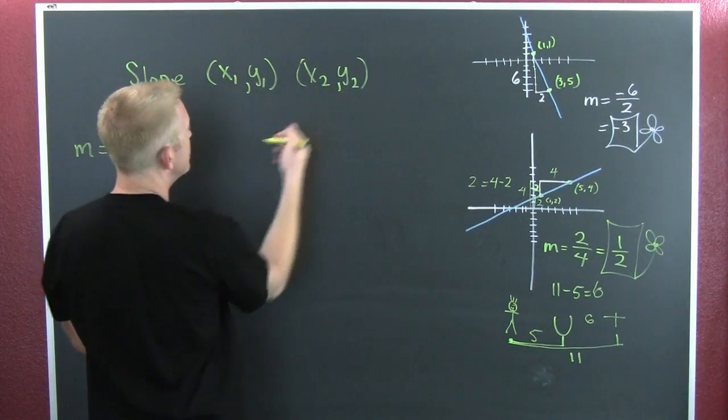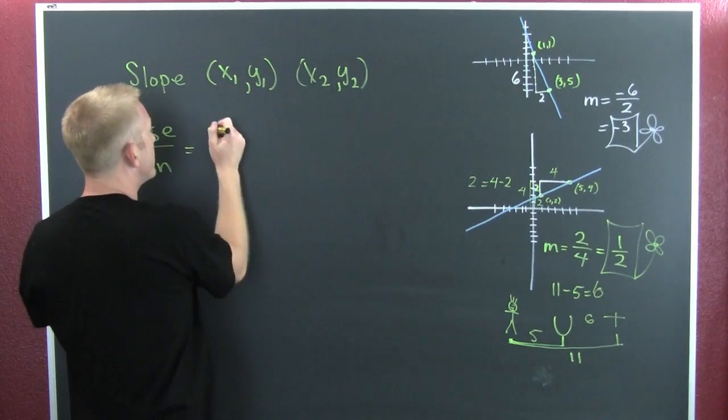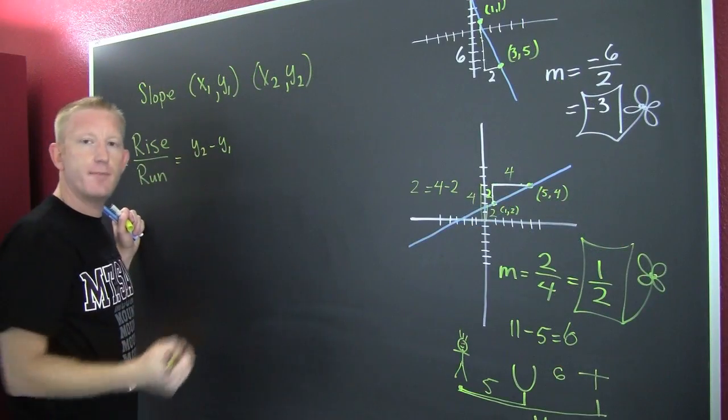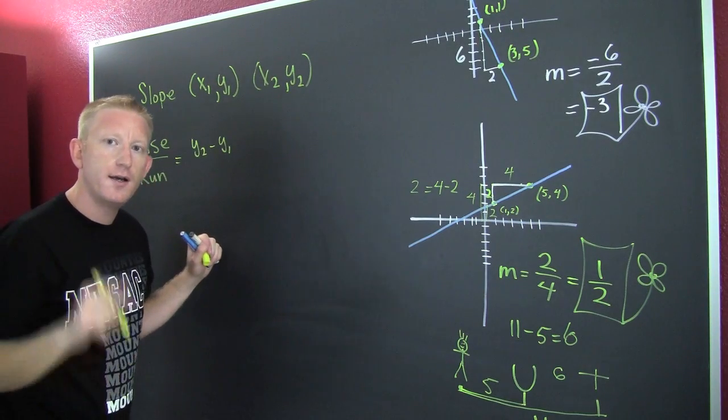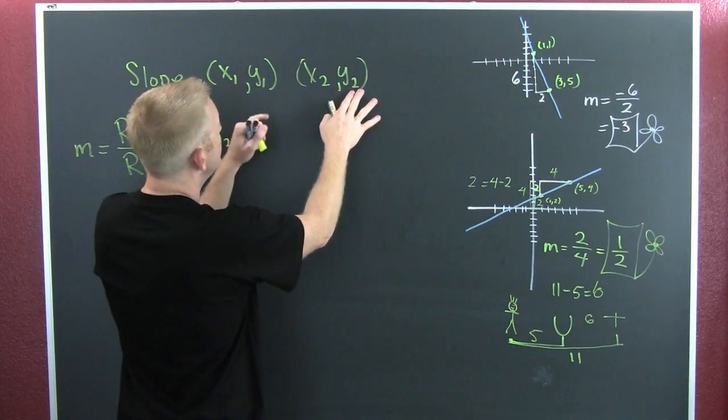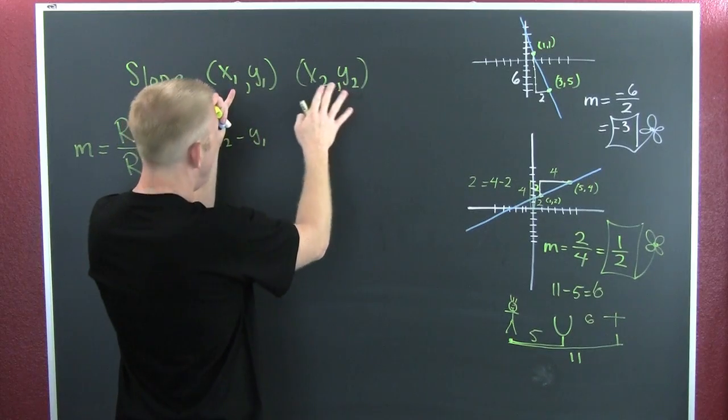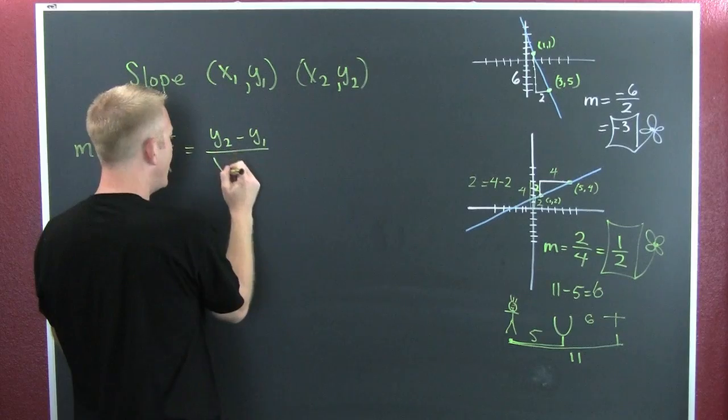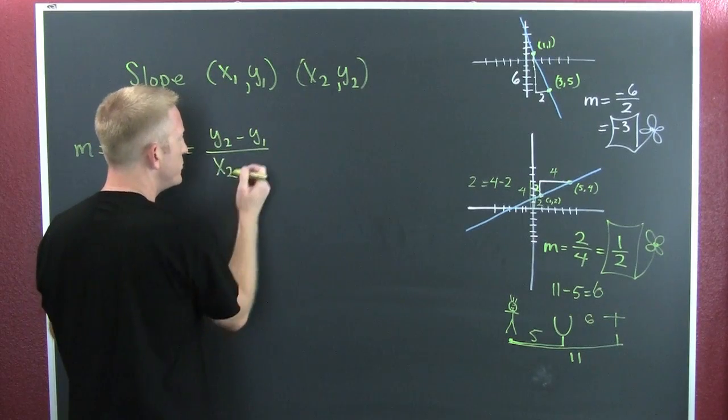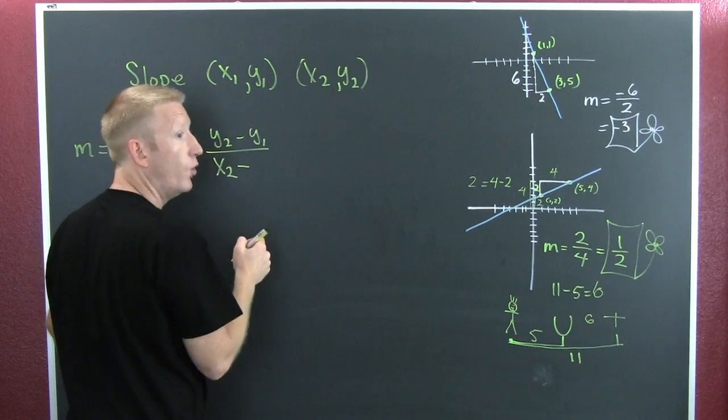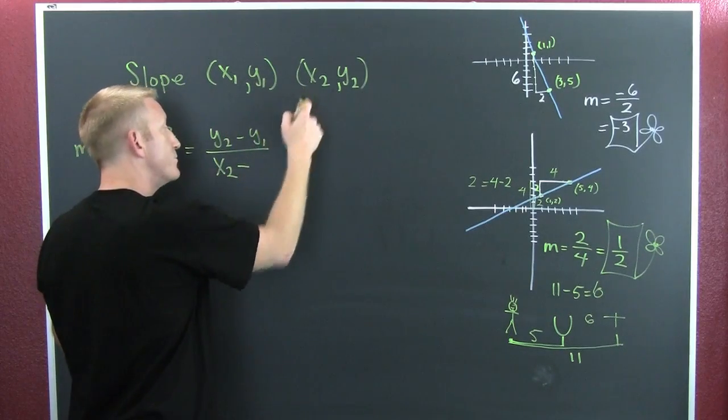So far what we have is we're going to take the difference between the y values, particularly y2 minus y1. And I know at this point you're like, does it matter the order? No, as long as you keep them straight and you keep your twos before your ones. I'm just pointing out that the order matters, the labeling doesn't.